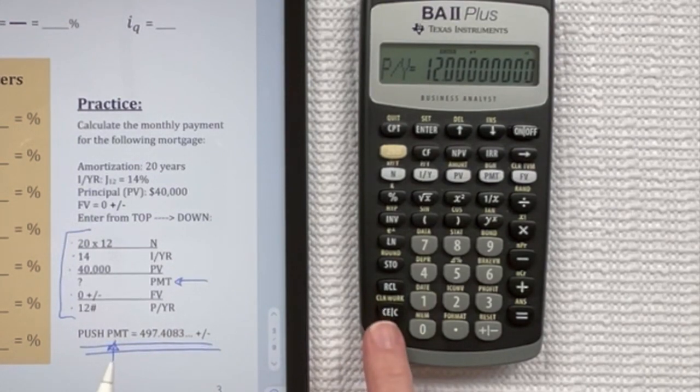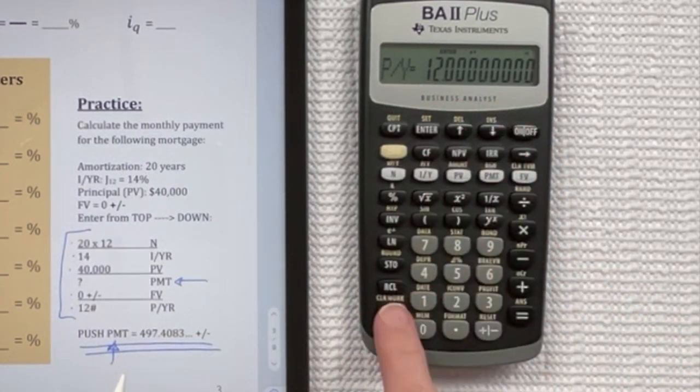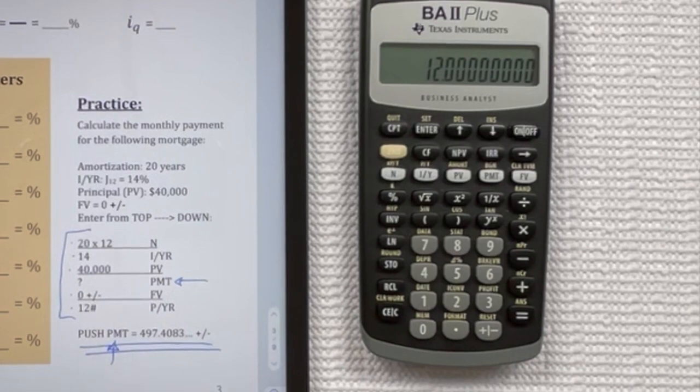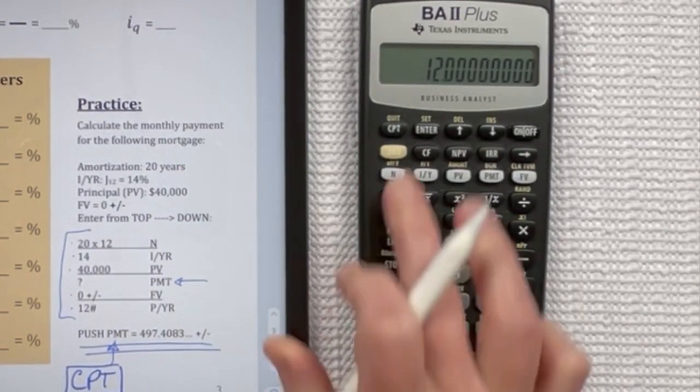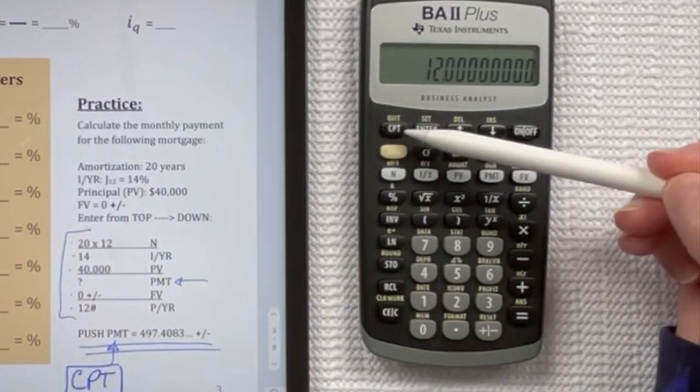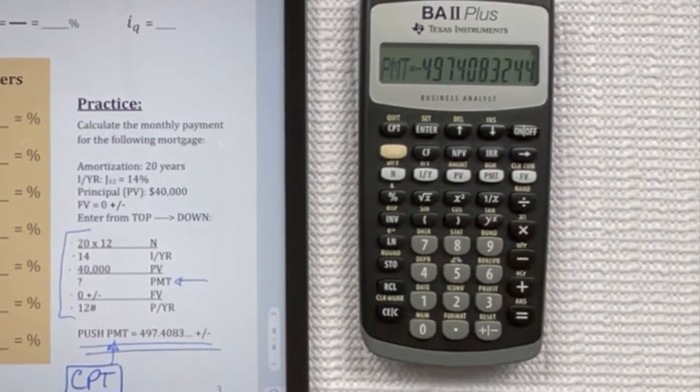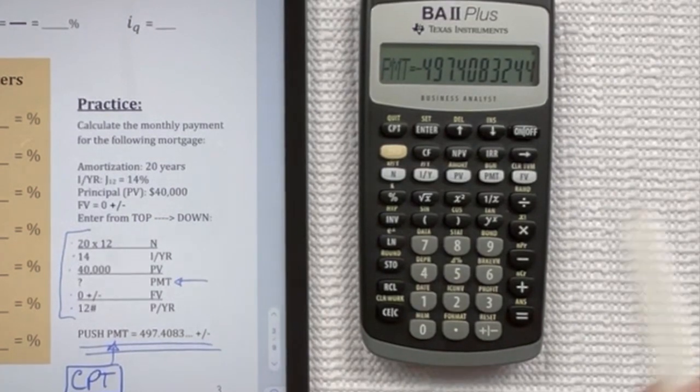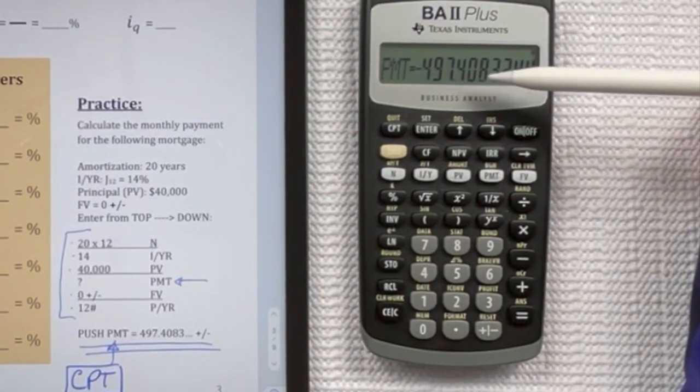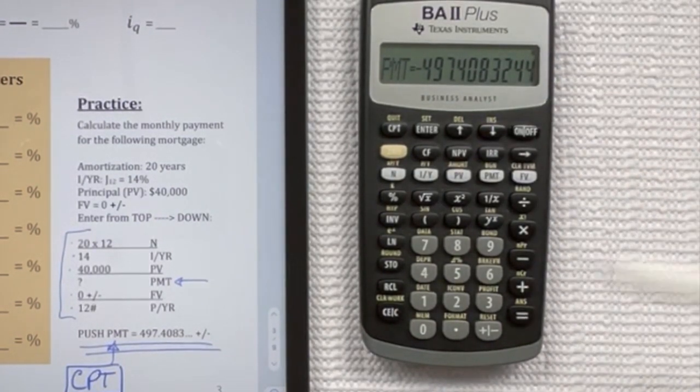So then because we're trying to find payment, and we're in this table, we need to exit the table. And then to get the payment amount, you need to use the compute button. So you're going to push compute, which is here, and then your payment key. And you see that I get the correct answer, negative 497.408.